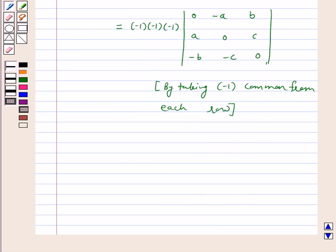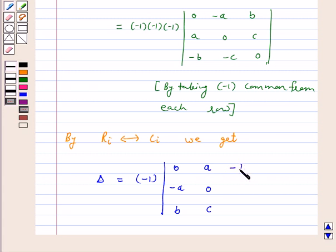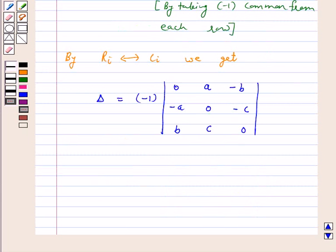Now, by interchanging Ri to Ci, we get delta is equal to minus 1 into 0, minus A, B, second row is interchanged to second column, A, 0, C, and third row is interchanged to third column, minus B, minus C, 0.